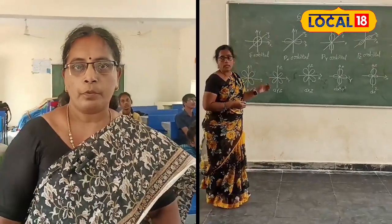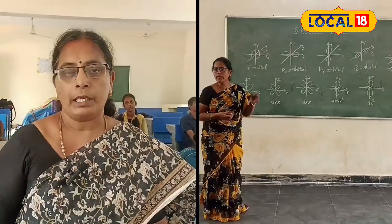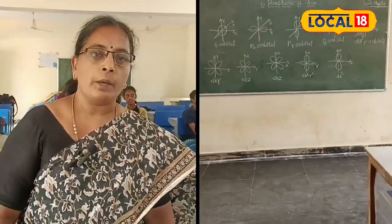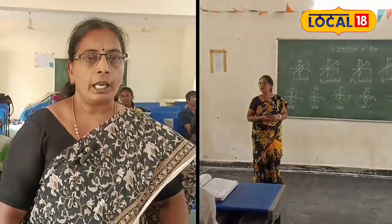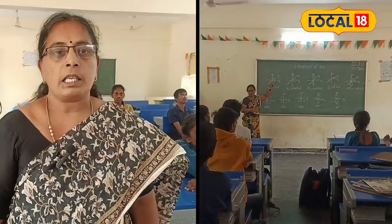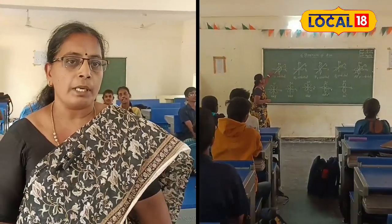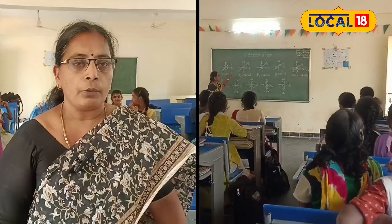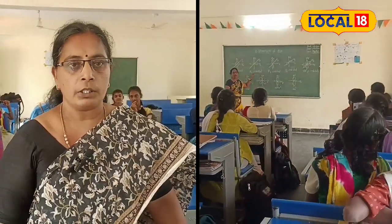I am doing the work adjustment for the physical science teacher. We are taking the 10th syllabus. We divide the 4th grade into A, B, and C. In A grade and B grade, the physical science paper will be 50 marks.